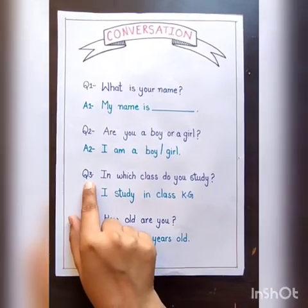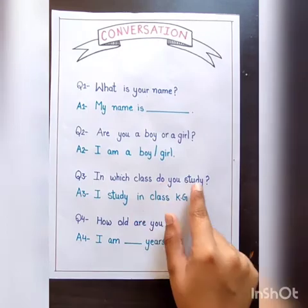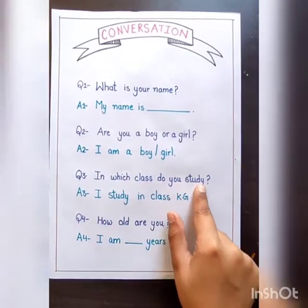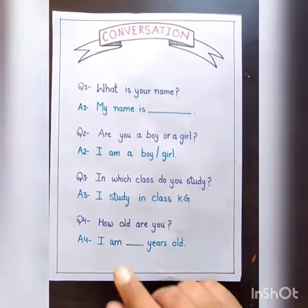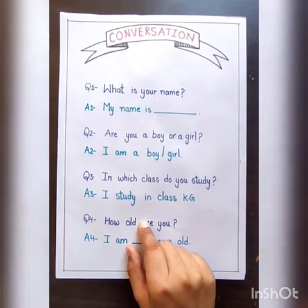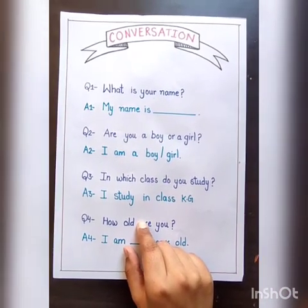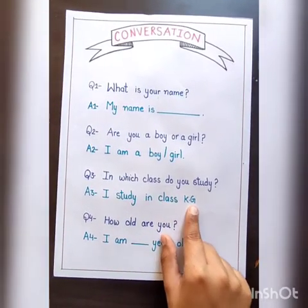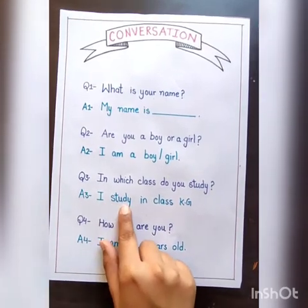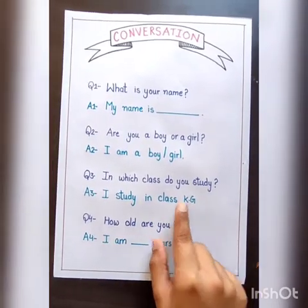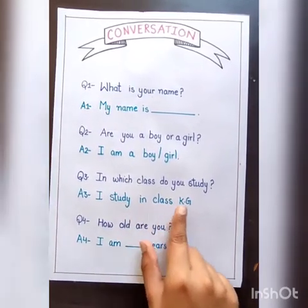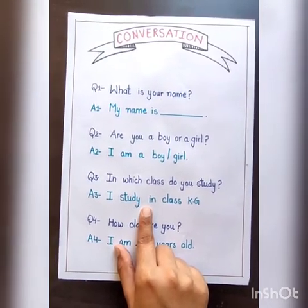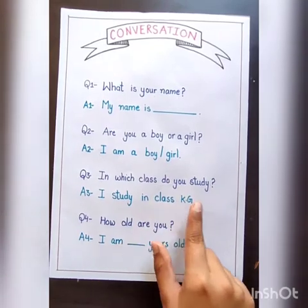Question number three is: In which class do you study? آپ کس کلاس میں پڑھتے ہو۔ تو اگر آپ class KG میں ہو تو آپ answer کرو گے: I study in class KG. اس کا مطلب ہے میں class KG میں پڑھتا ہوں یا پڑھتی ہوں۔